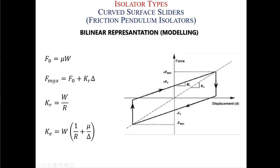How do we model friction pendulum isolators? It is actually easier than rubber bearings. Everything depends on the friction and the radius of curvature. The initial stiffness is nearly infinite — very high. As you increase the force, nothing moves until the friction force is overcome. That threshold point is the friction force, which depends on the friction coefficient and the axial load. Once you know the axial load, you can calculate this point.